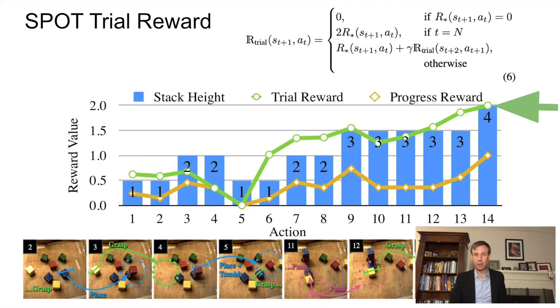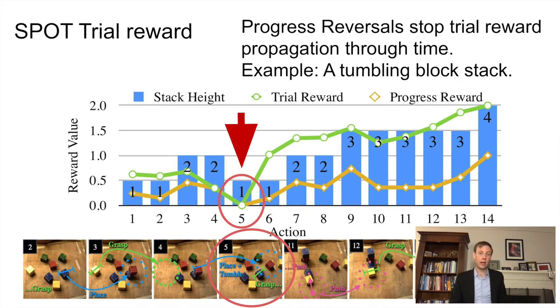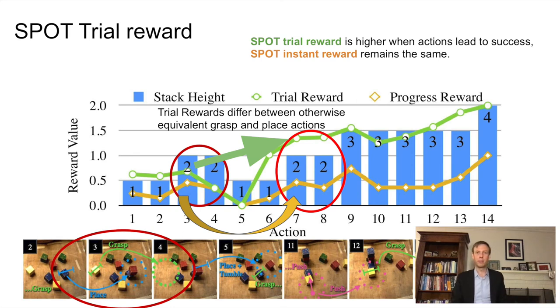A nice property of this design is that a progress reversal triggers zero reward like it does in the instant rewards, which means reward propagation is cut off at that step. Let's compare the grasp and place actions at steps three and four, which come just before the stack topples, to steps seven and eight, which are followed by a sequence of successful actions leading to a complete stack. This gives us exactly the behavior we want because reward is higher for the successful sequence, even though the action and stack height is the same.